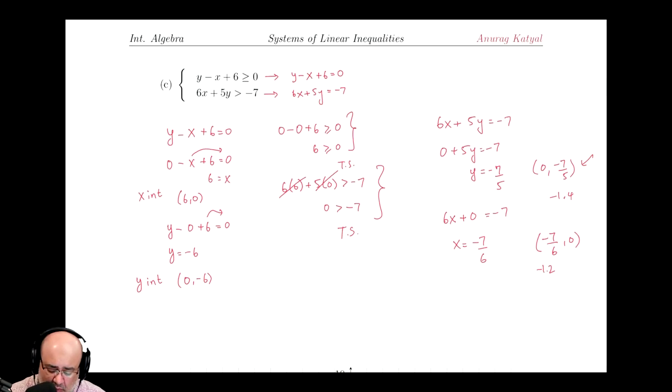So here I found x and y intercepts for both of them. For the first equation, x-intercept and y-intercept. For the second equation, x-intercept and y-intercept. So to find those, I plugged in 0 for x to find the y-intercept, and then I plugged in 0 for y to find the x-intercept.